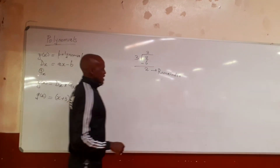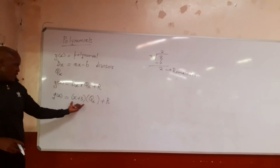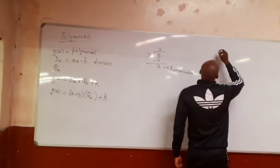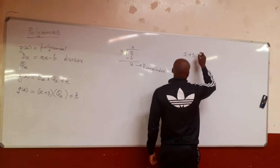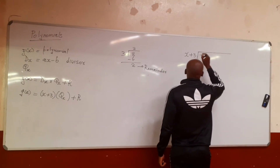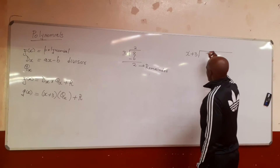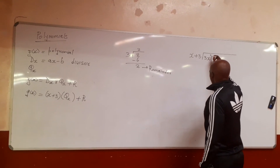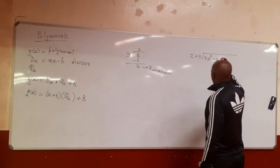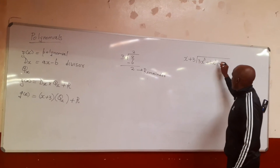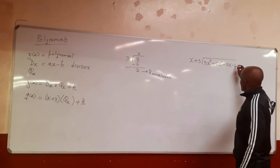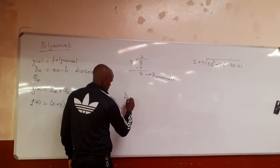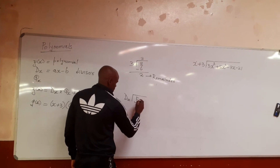Same idea here. We set up our divisor and our dividend. The dividend was 3x³ plus 5x² minus 7x minus 21. As you can see, we have our divisor and we have our polynomial set up for long division.